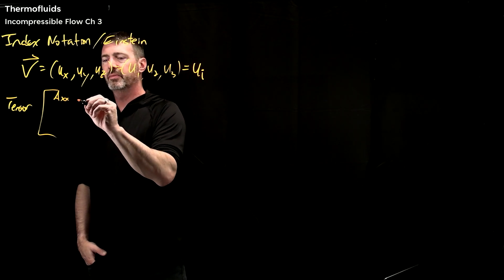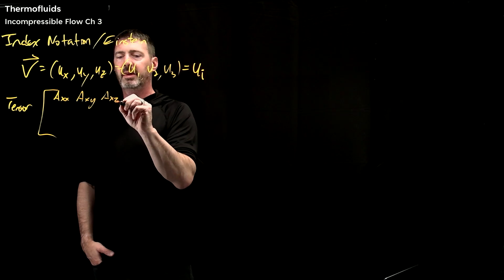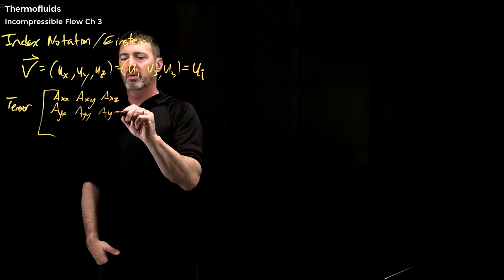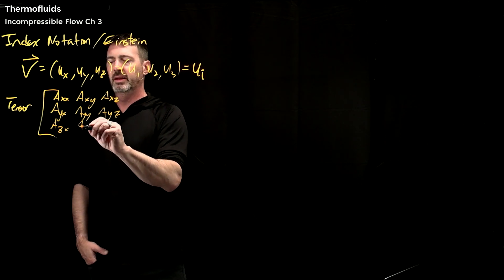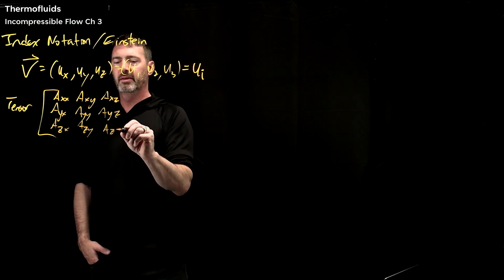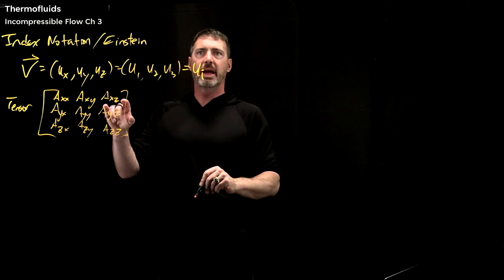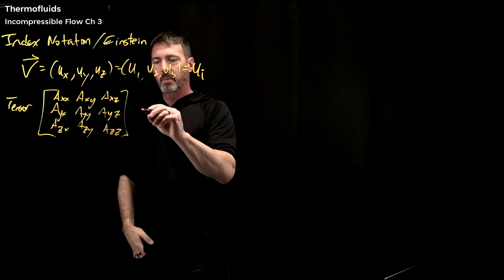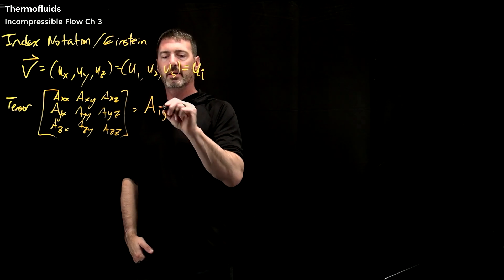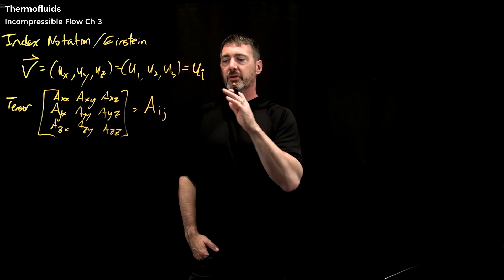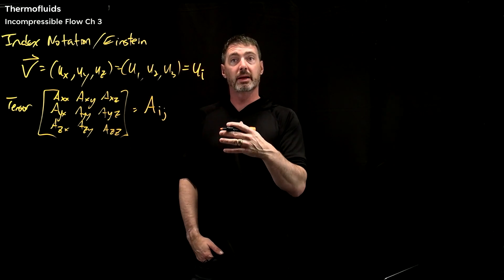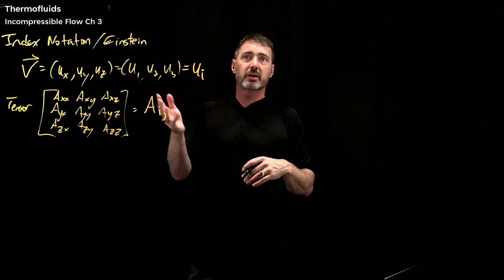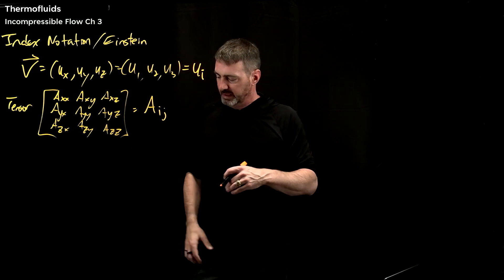So imagine a 3×3 matrix: A_xx, A_xy, A_xz, then A_yx, A_yy, A_yz, then A_zx, A_zy, A_zz. Same sort of thing: x is one, y is two, z is three. So we'd write this as A_ij. Now there are two free indices here, which implies this is a two-dimensional matrix or a tensor. I and J are going to run from one to three. So that's some basic notation.